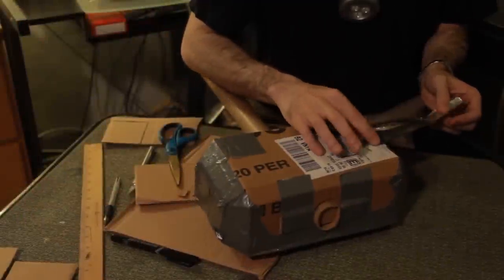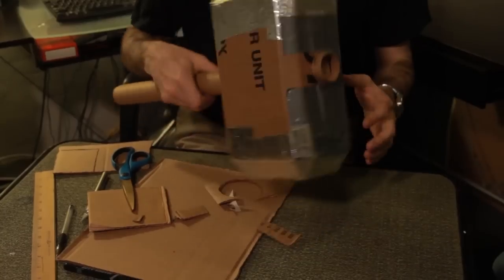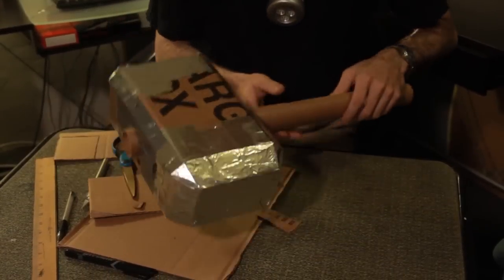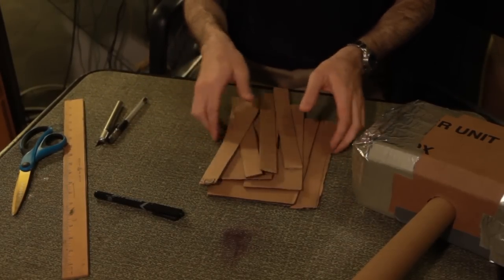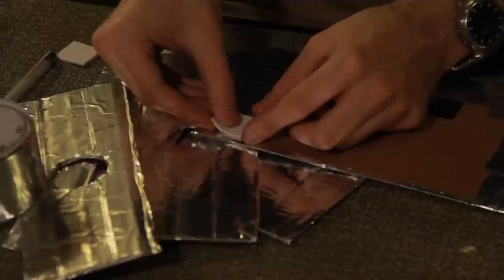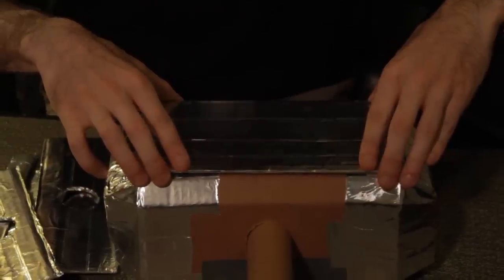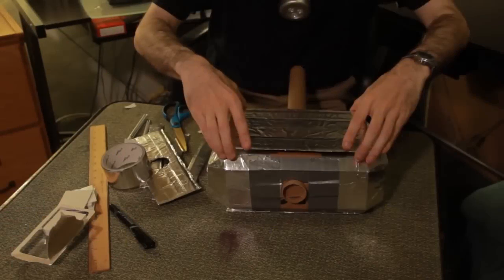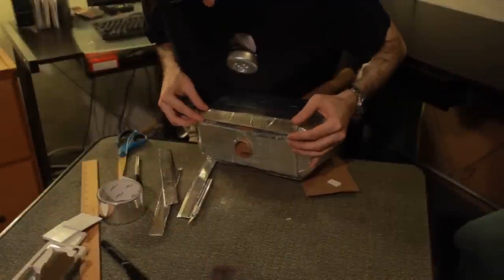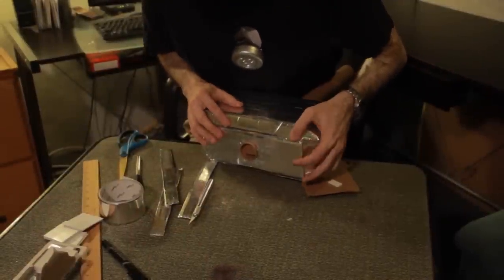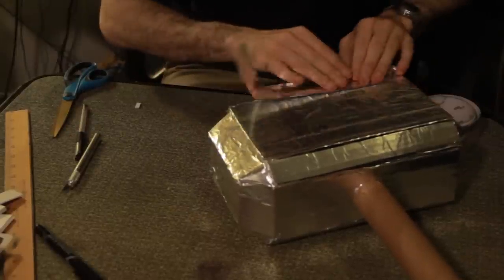Cover the two end sections of the hammer in aluminum tape. Take the extra template pieces from earlier and wrap them in aluminum tape. Use adhesive foam squares to attach these pieces to their matching counterparts on the hammer. Use aluminum tape to cover all the seams of this outer layer of the hammer.